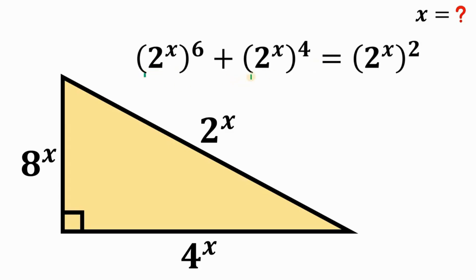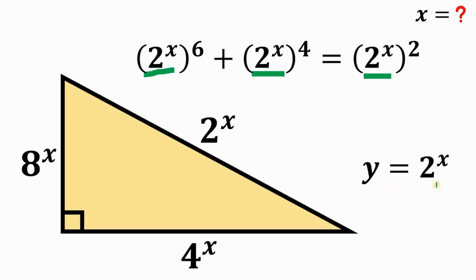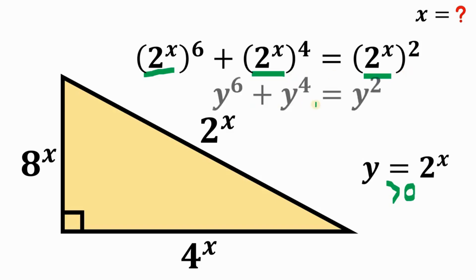Since we now have a common term of 2 raised to the power of x, we replace it with another variable — let's call it y — where y equals 2 raised to the power of x. Technically, y is greater than 0, because 2 raised to the power of x is always greater than 0. Our equation now becomes y raised to the power of 6 plus y raised to the power of 4 equals y raised to the power of 2.